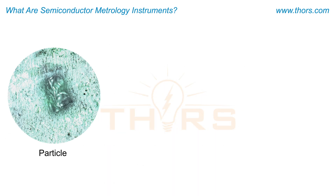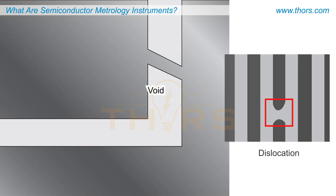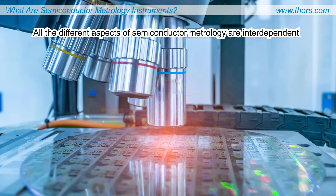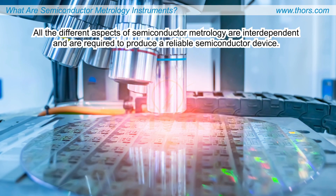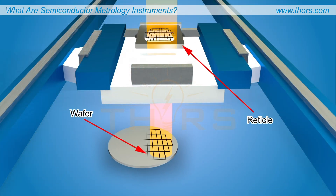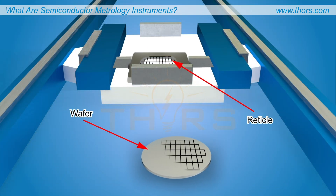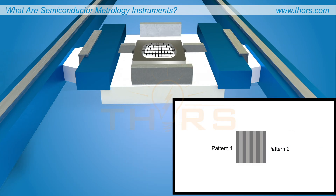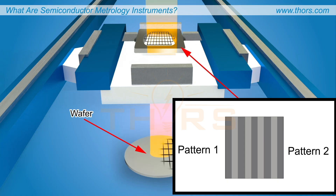Defects such as particles, voids, and dislocations on wafer surfaces are also detected and characterized using semiconductor metrology instruments. All the different aspects of semiconductor metrology are interdependent and are required to produce a reliable semiconductor device. For example, in the photolithography process, understanding the surface topography is crucial for achieving precise alignment of patterns, which directly impacts the performance of a semiconductor device.